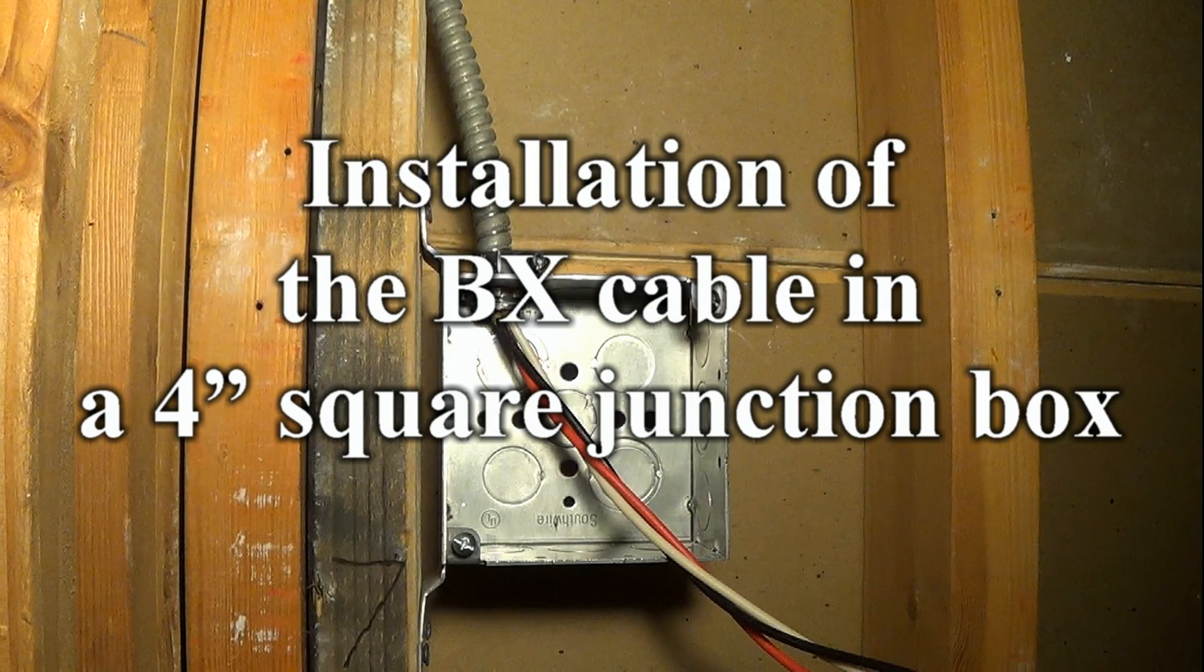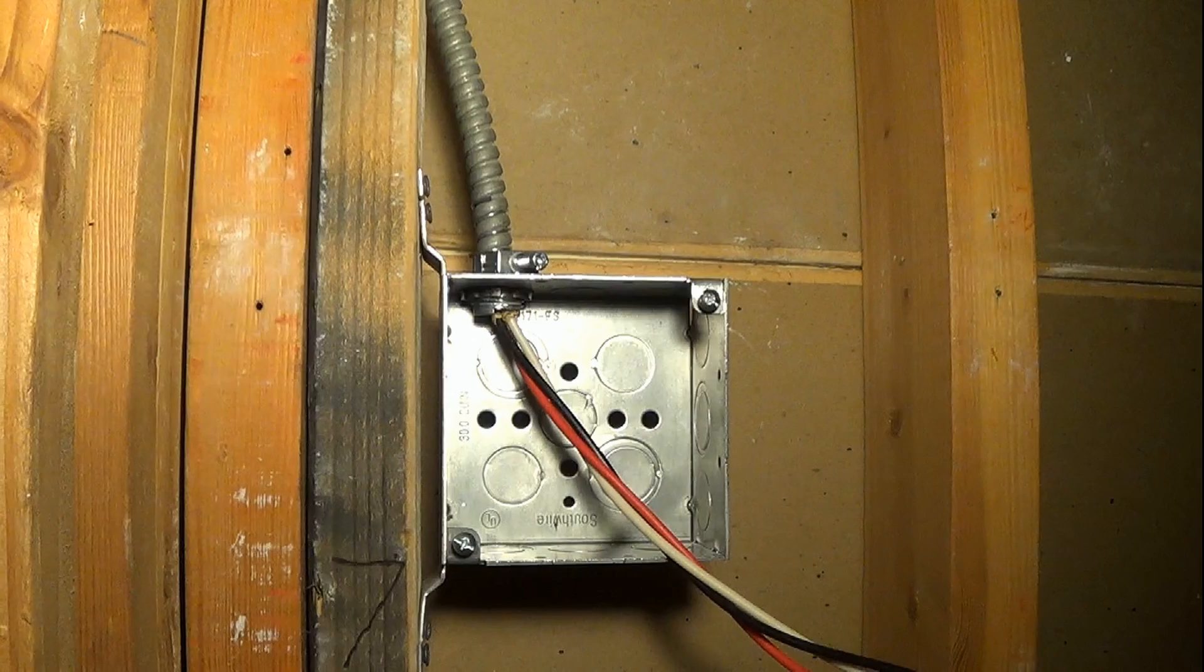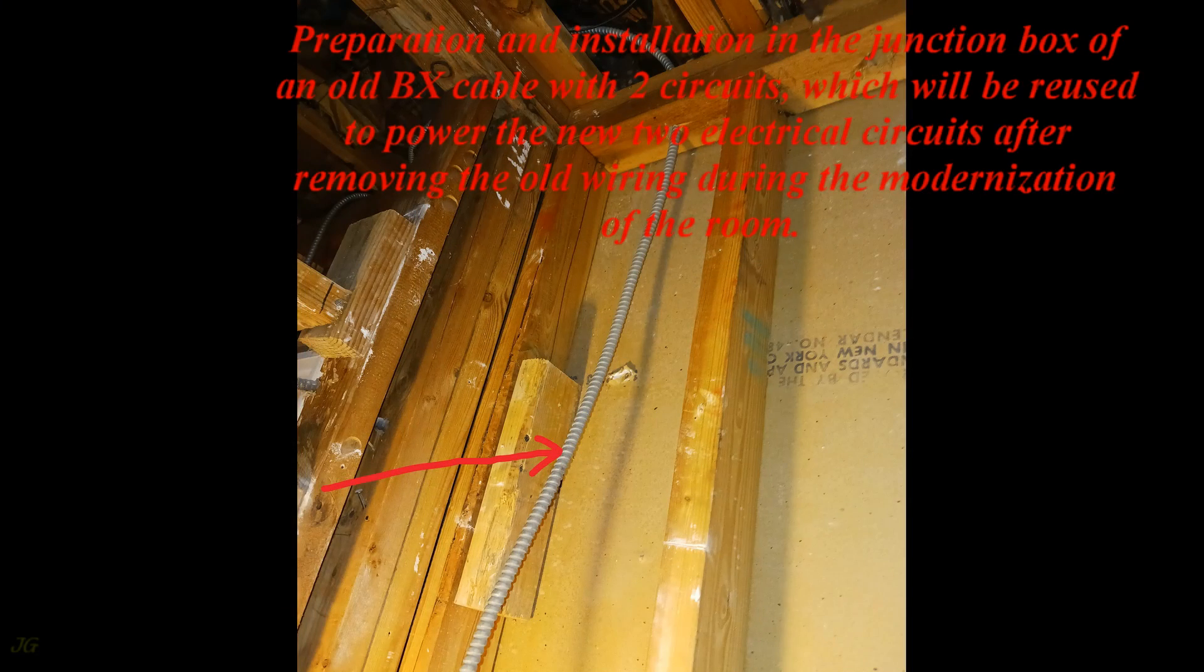Installation of the BX cable in a 4-inch square junction box. Preparation and installation in the junction box of an old BX cable with two circuits, which will be reused to power the new two electrical circuits after removing the old wiring during the modernization of the room.